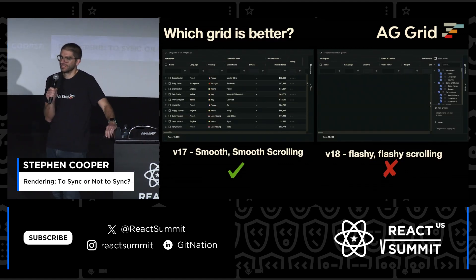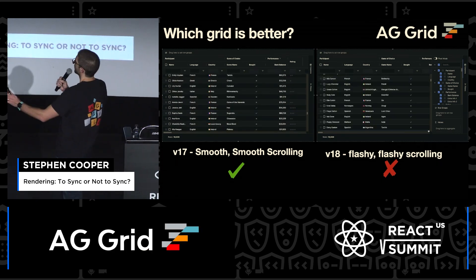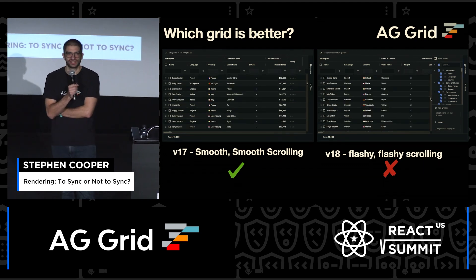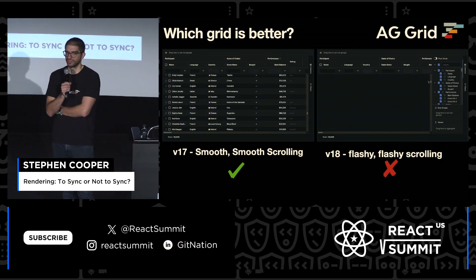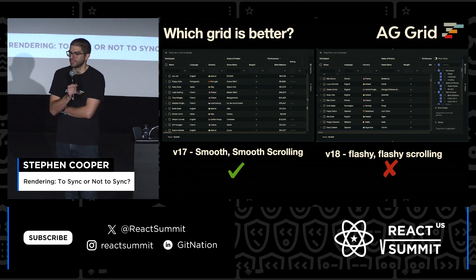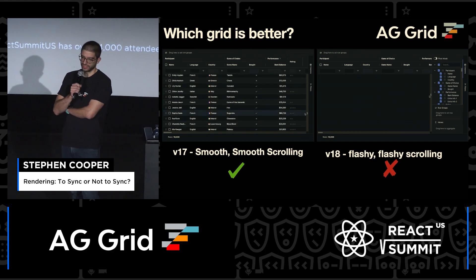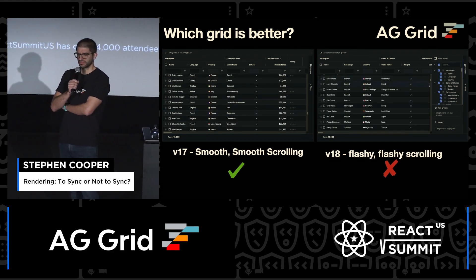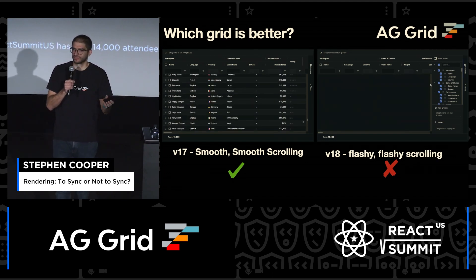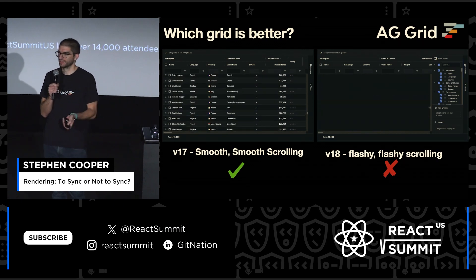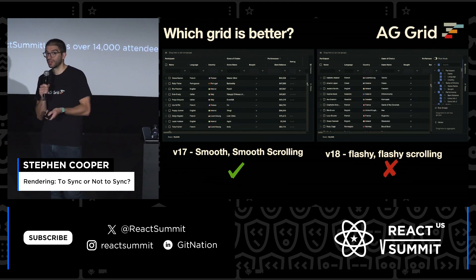It should hopefully be an easy question to answer. Which of these grids is better? On the left, we've got AG Grid running in version 17 of React, where you've got this nice smooth scrolling. You can click the scroll bar and the rows just appear in the right place. But then you upgrade to version 18 — this is an older version of AG Grid which had this issue — you click the scroll bar and the rows flash, or you start scrolling up and down and the rows blank out. This is not what we want the user experience to be.